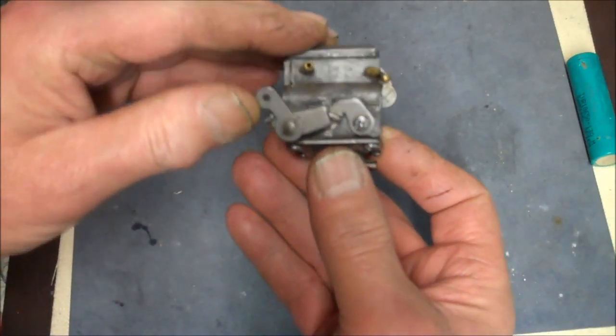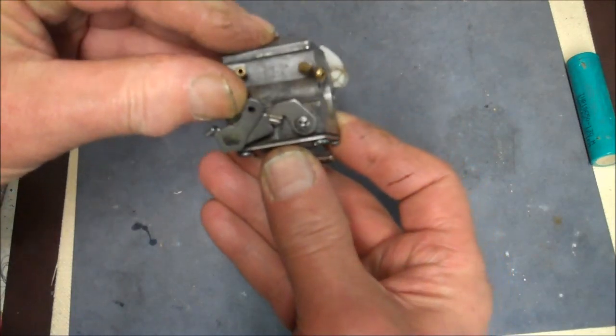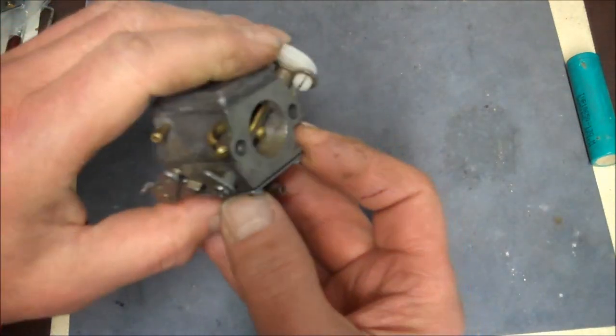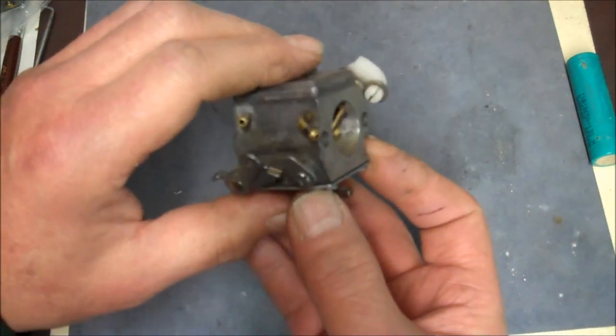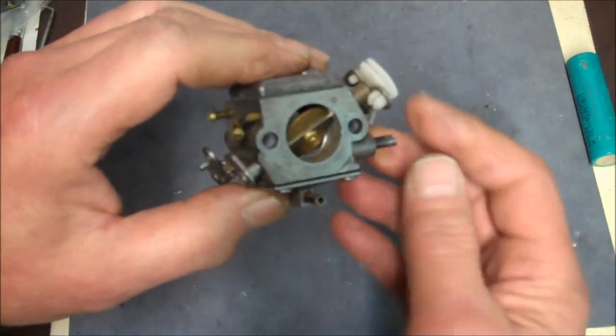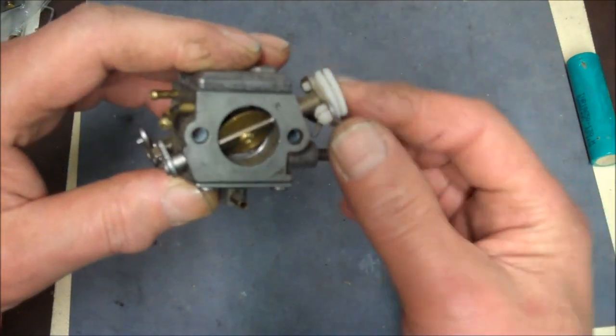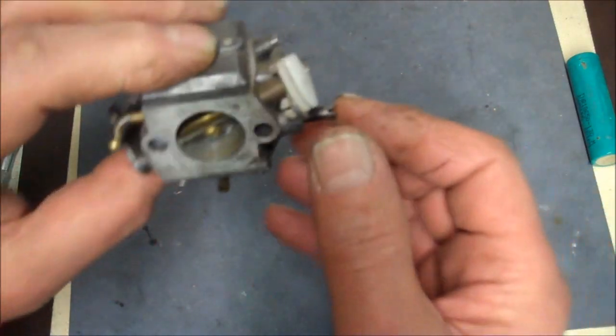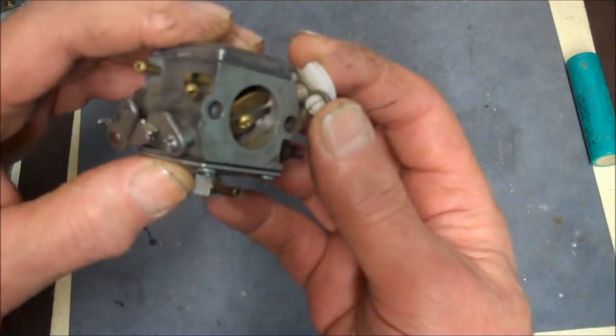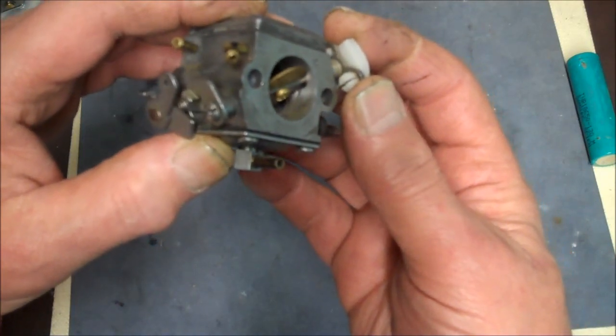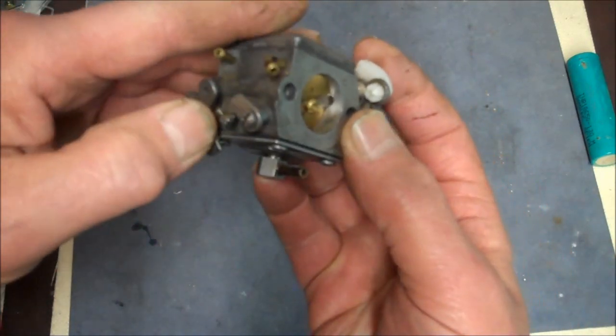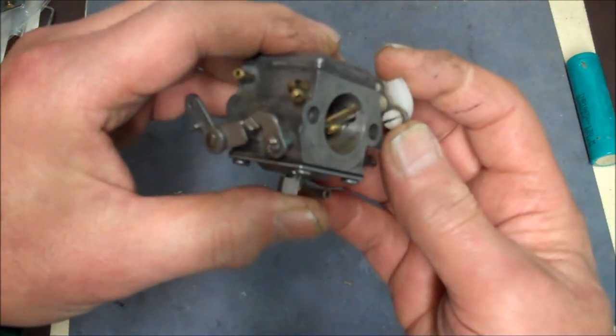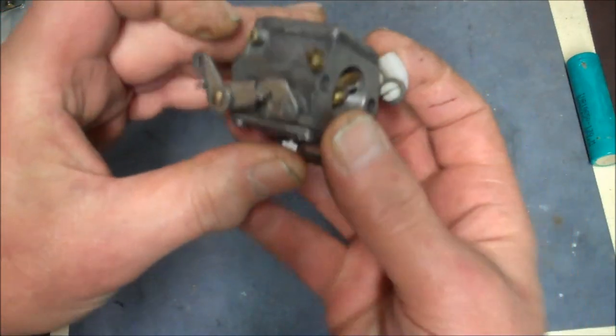So now if you push the choke back in, it still stays open. So when you start it, it'll still be on a higher idle. So now when it finally starts and you hit the throttle, which is this, see the other throttle side, you recognize that? So when you hit that, you see that lever here? How it releases?